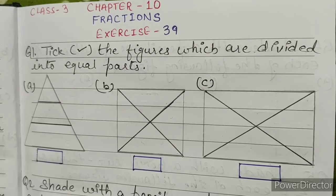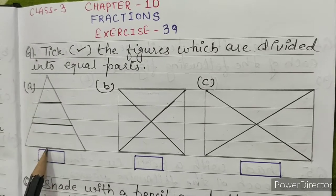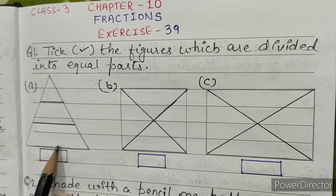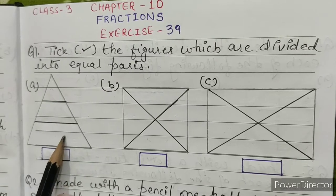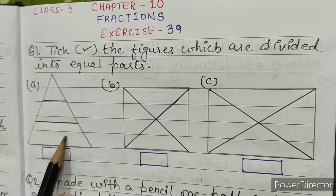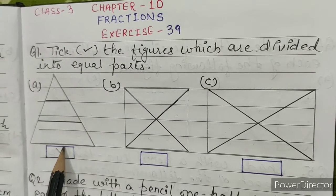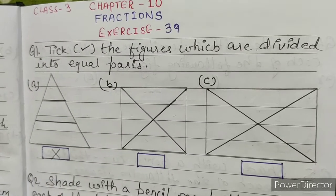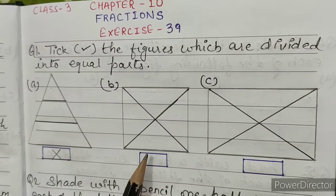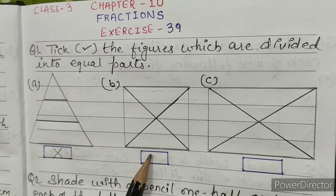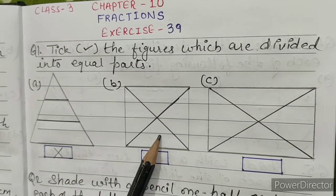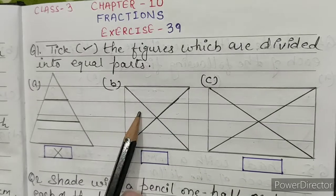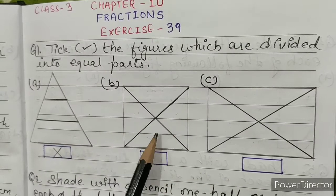This is a triangle and it is divided into 3 parts, but all the parts are not equal. So we'll mark it as cross. B: as we can see, this is a square, divided into 4 parts.